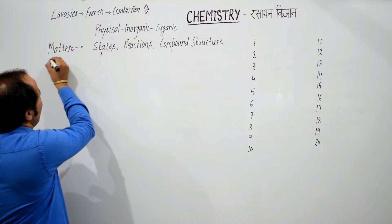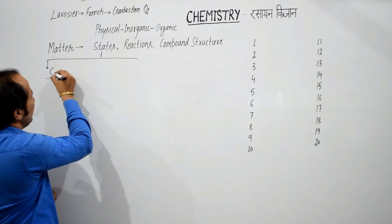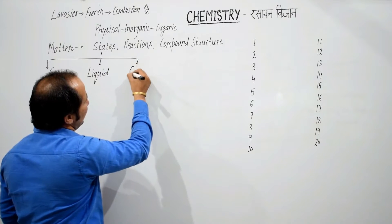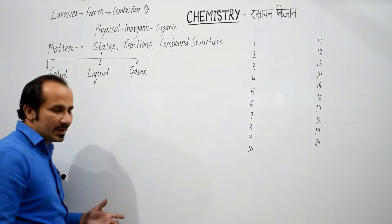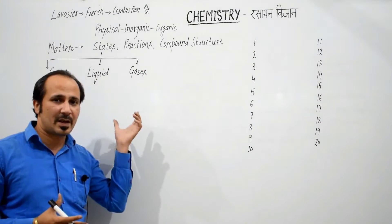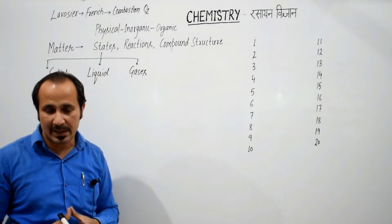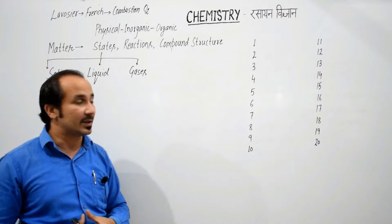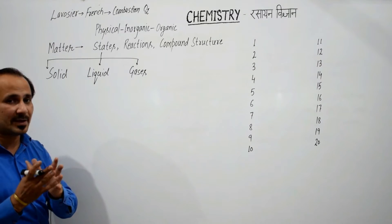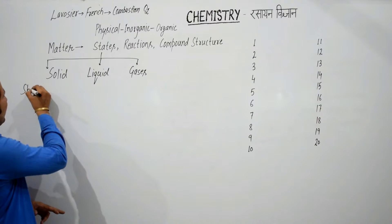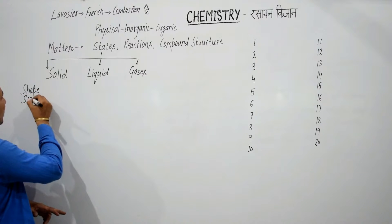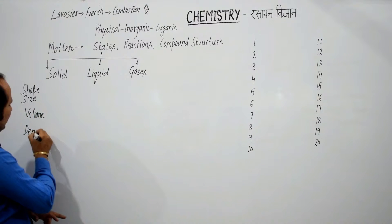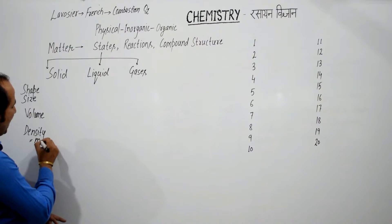Now we will learn about states of matter. As we have heard, there are three things that we call solid, liquid, or gas. Now let's talk about solid, liquid, or gas. What does it mean? One — shape or size; second — volume; third — density.